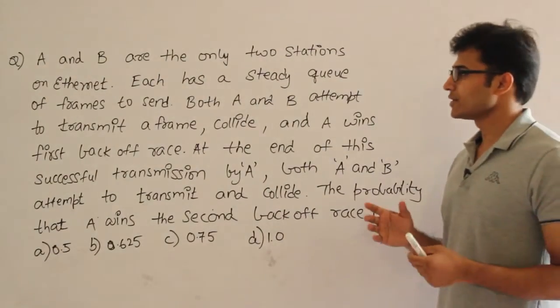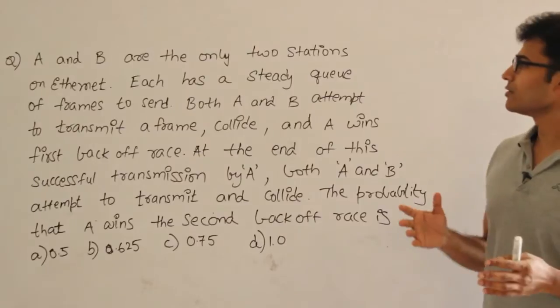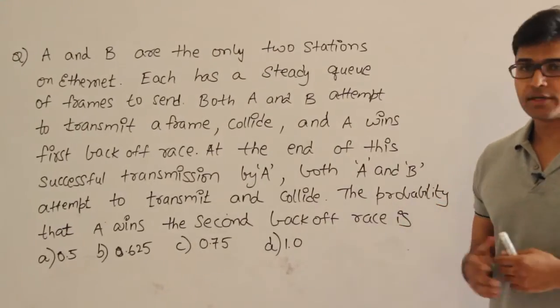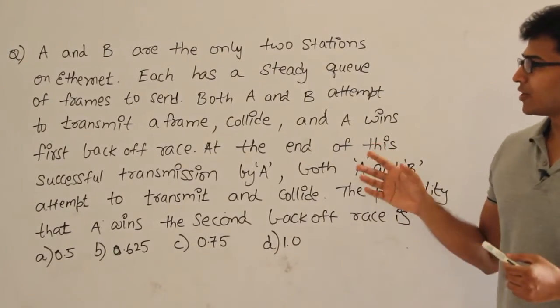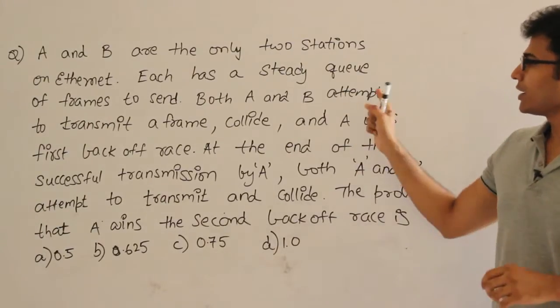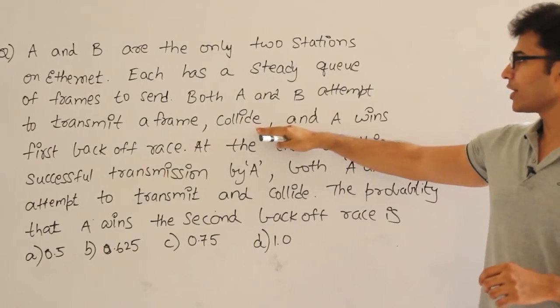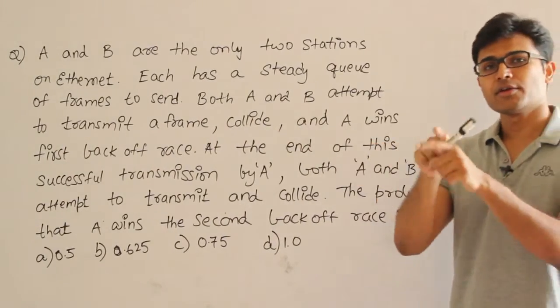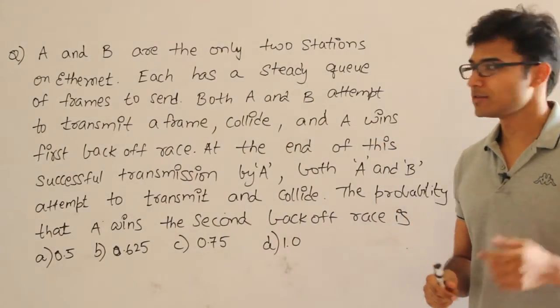Look at this question. They are saying that two stations A and B are on the Ethernet and each has a steady queue of frames to send. Both A and B attempt to transmit a frame, collide, which means both of them are trying to send the frame at the same time and there is a collision.